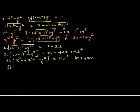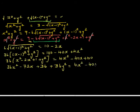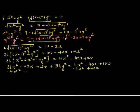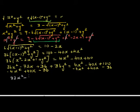Expanding the left side: 36x squared minus 72x plus 36 plus 36y squared equals 4x squared minus 40x plus 100. Taking away 4x squared from both sides, adding 40x to both sides, and taking away 36 from both sides, this becomes 32x squared minus 32x plus 36y squared equals 64.